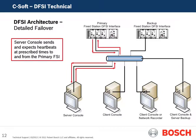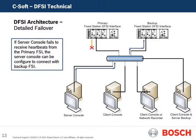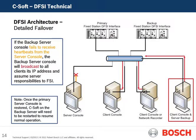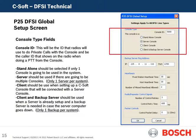Let's now take a detailed look at failover or backup technologies deployed by Telex for our DFSI offering. The server console sends and expects heartbeats at prescribed times to and from the primary fixed station. If the server console fails to receive heartbeats from the primary fixed station, it can, if programmed, connect to a backup fixed station, as shown by the blue arrows. If the backup server console fails to receive heartbeats from the server console, it will broadcast to all clients its IP address and assume server responsibilities. Note: once the primary server console is restored, C-SOFT on the backup server will need to be restarted to resume normal operation.